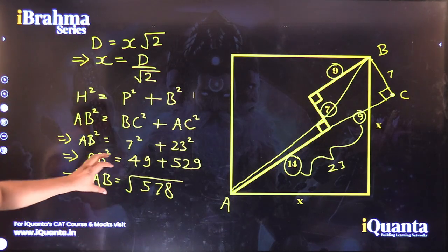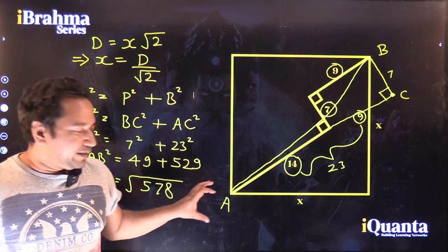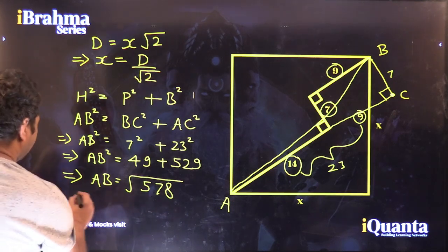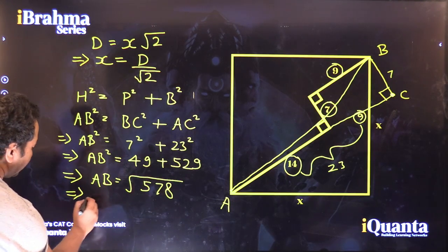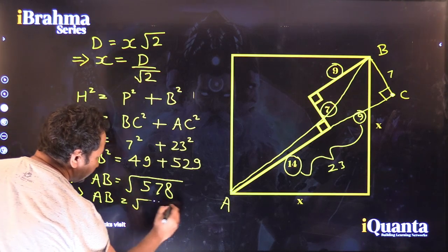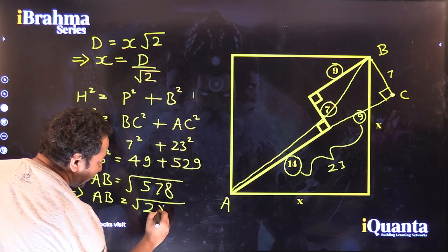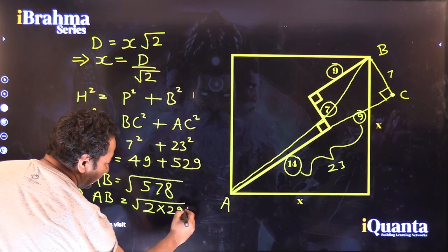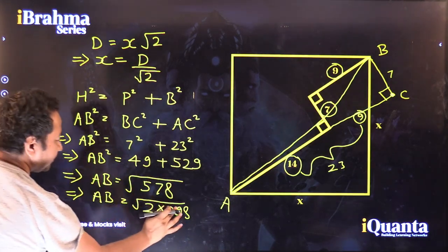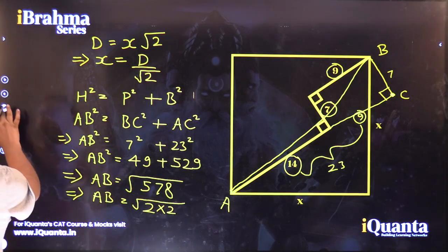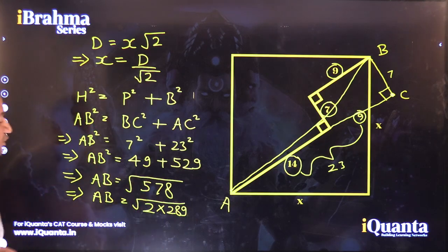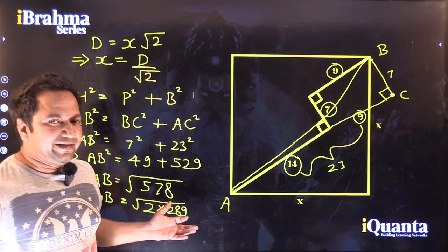Now, if you factorize 578, it is 2 multiplied by 289. And we know that square root of 289 is nothing but 17.